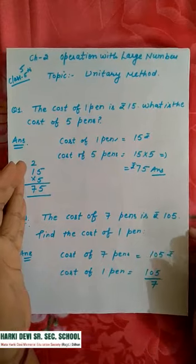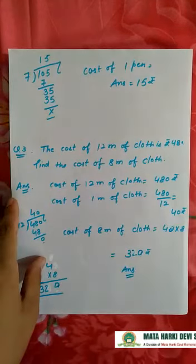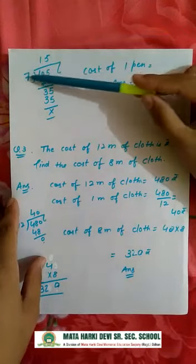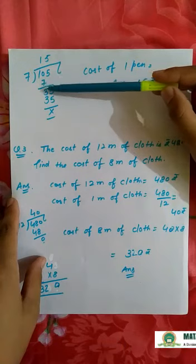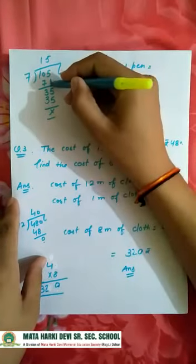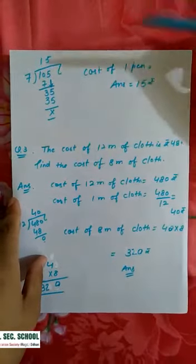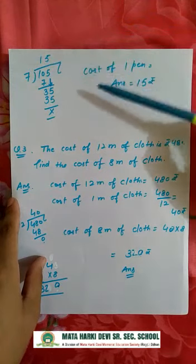So left is three, we write, then five is this. So next, seven fives is 35, so 35. So cost of one pen is 15 rupees.